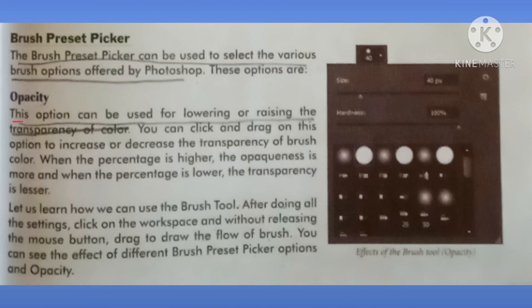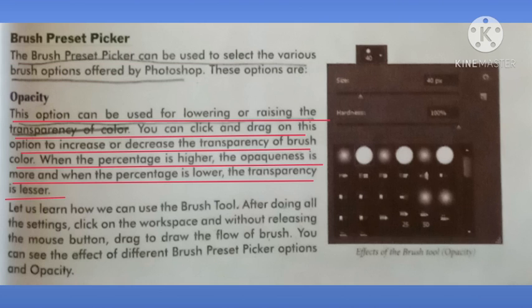One option is Opacity. This option can be used for lowering or raising the transparency of color. You can click and drag on this option to increase or decrease the transparency of brush color. When the transparency is higher, the opacity is more, and when the percentage is lower, the transparency is lesser. Opacity ek aisa tool hai jo color ki transparency ko high ya low set karne ke liye use hota hai.